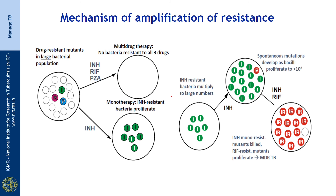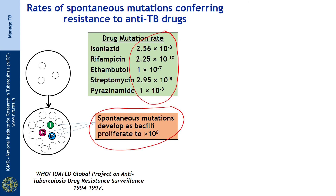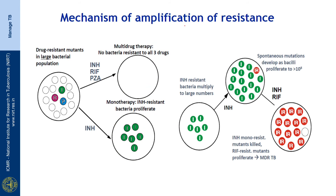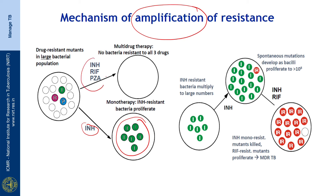This figure explains the mechanism of amplification of resistance. Whenever only INH is used and the patient harbors INH-resistant organisms, monotherapy amplifies resistance and produces more INH-resistant organisms. Whereas when treated with three drugs — INH, rifampicin, and pyrazinamide — all three are affected and ultimately no bacteria resistant to all three drugs are seen at end of treatment.